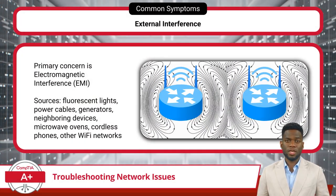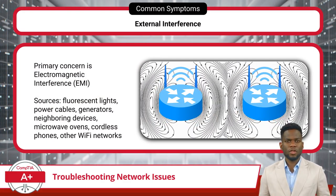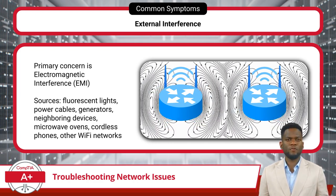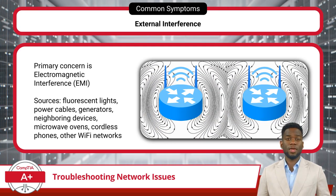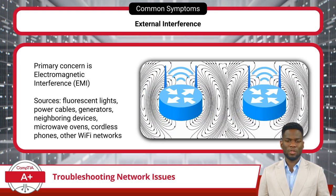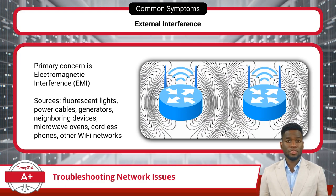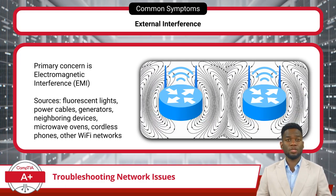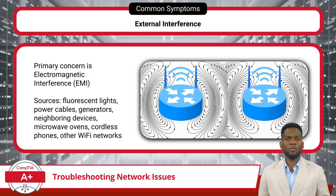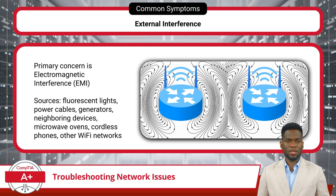External interference, such as electromagnetic interference (EMI), poses a significant threat to the stability and reliability of wired networks. EMI can originate from various sources, including fluorescent lights, power cables, generators, and nearby signals emitted by other electronic devices. When cables are exposed to EMI, it can disrupt the transmission of data signals, leading to packet loss and overall network performance degradation. To mitigate the impact of EMI on wired networks, it is essential to implement proper shielding and grounding techniques for network cables.